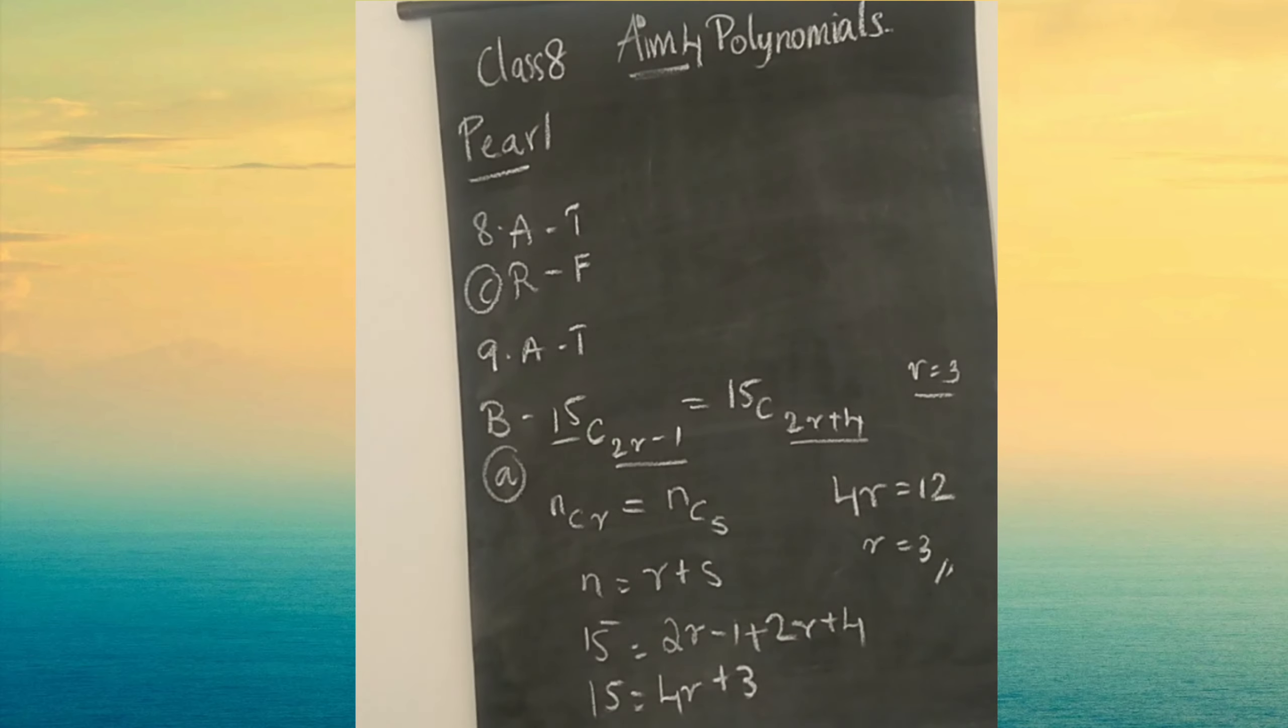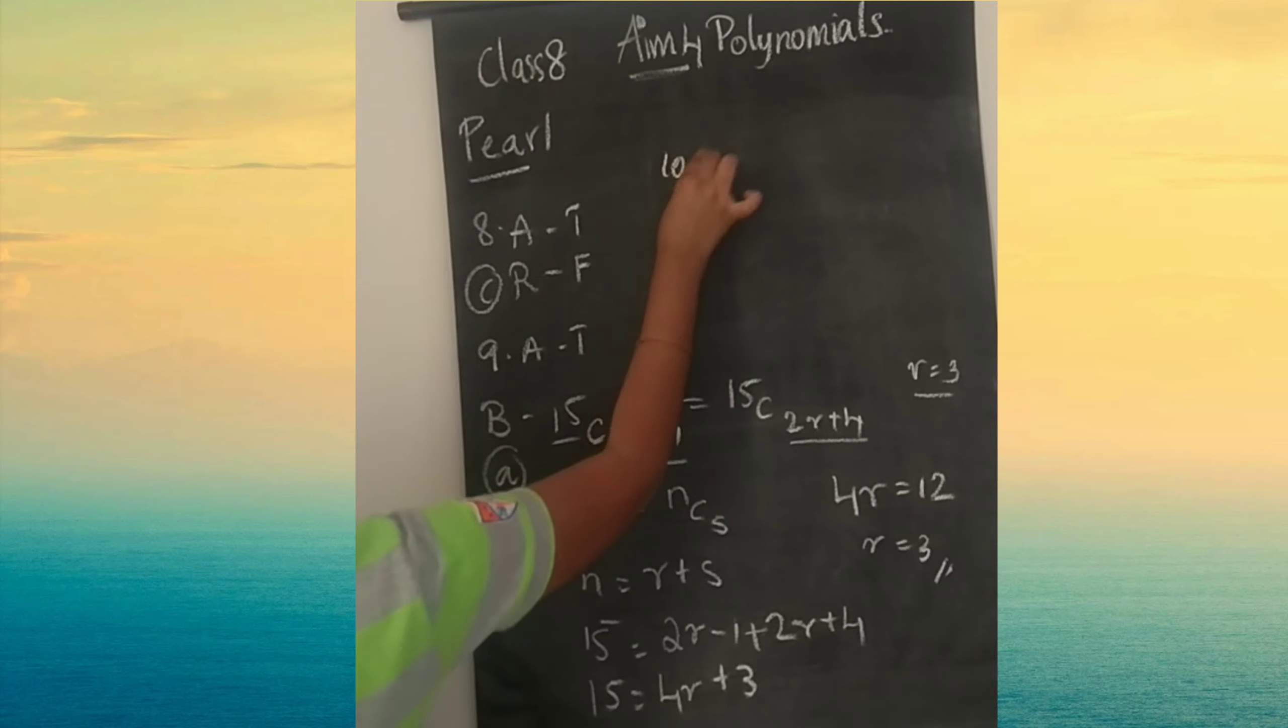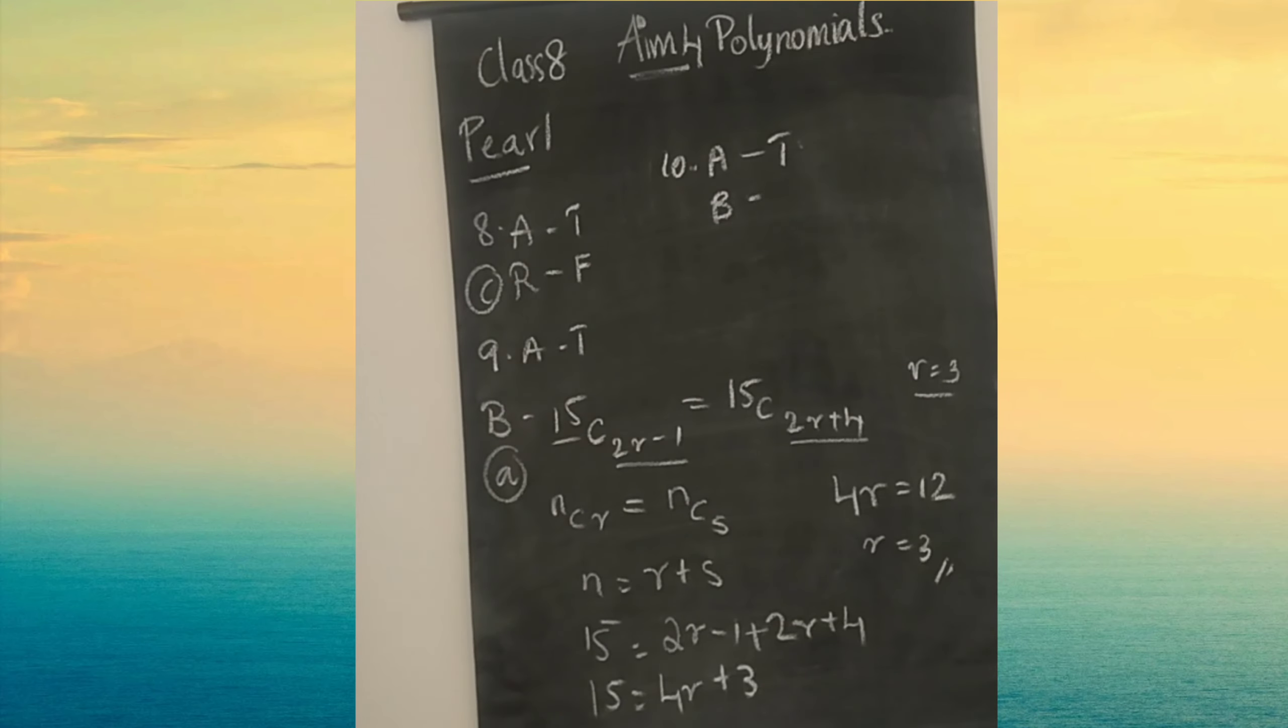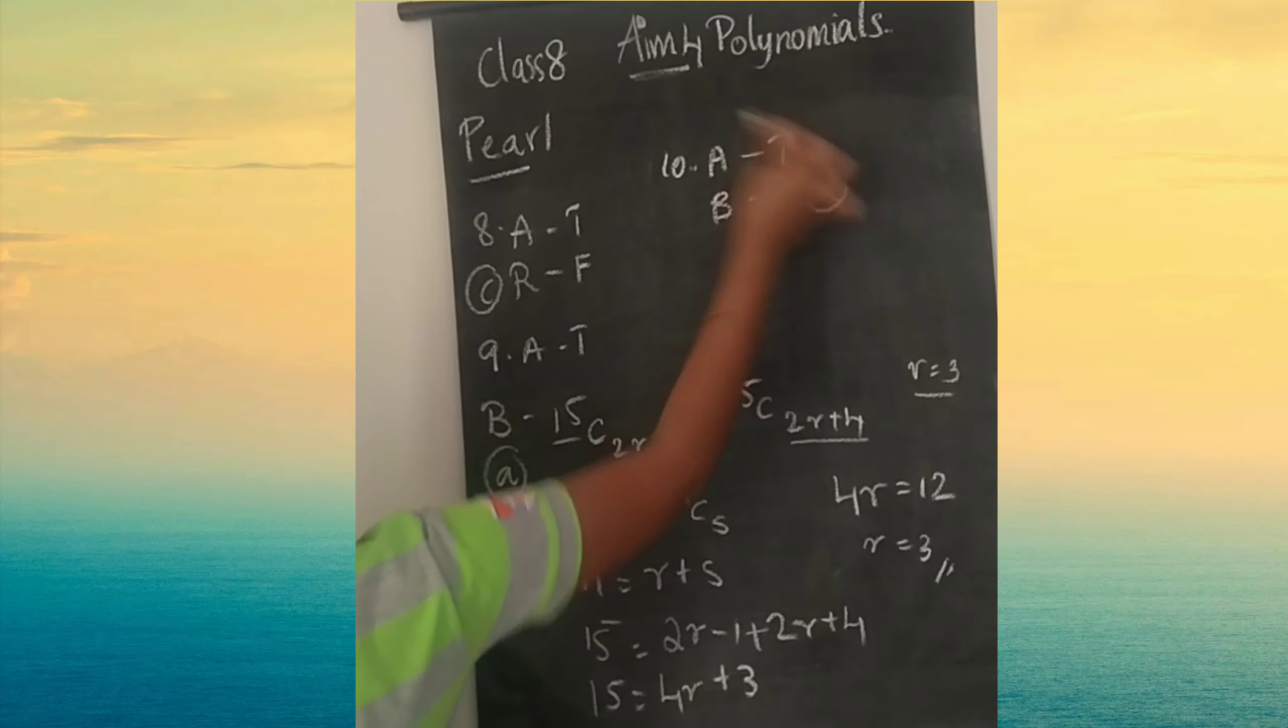Tenth one, statement A: 9C3 plus 9C4 is 10C4. Using that formula we can do that. A is true. Statement B: NCR minus 1 plus NCR equals N plus 1 CR. Using this formula we found A. It is obviously correct. Option A.